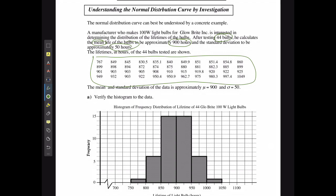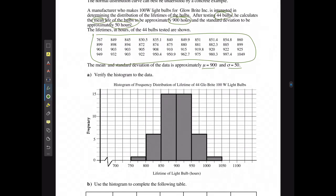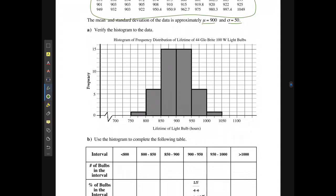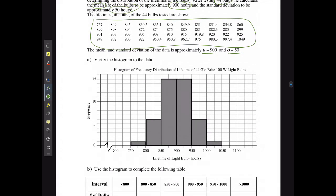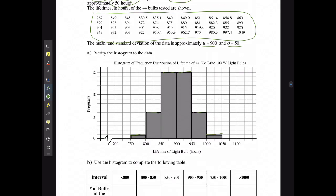If the mean and standard deviation is approximately mu equals 900 and sigma equals 50, then here is the histogram data. I took all those data sets and put them into ranges. This was from 750 to 800 with one case, 800 to 850 with six cases. For both 850 to 900 and 900 to 950, there's 15 cases of each.